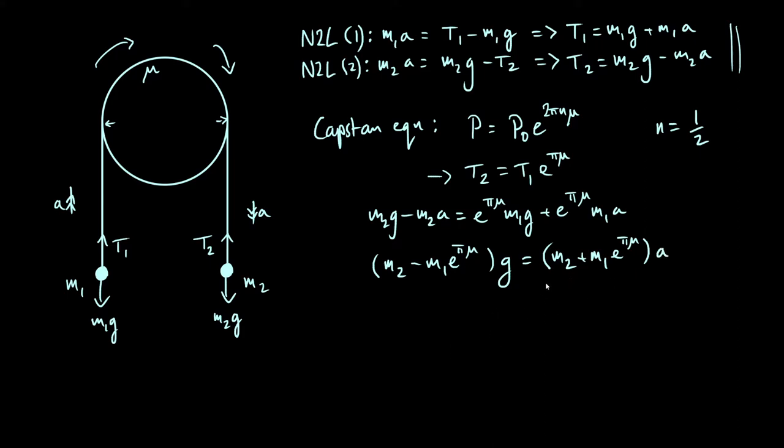And rearranging, very simply dividing by this factor here to get the acceleration, we find a is equal to m2 minus m1e to the pi mu over m2 plus m1e to the pi mu times the acceleration due to gravity.